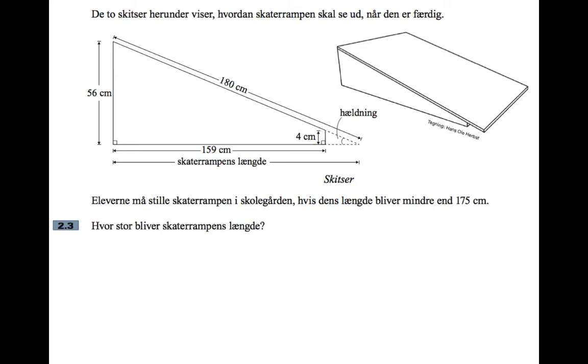The two sketches below show how the skater ramp should look when it's finished. The question is asking what will the skater ramp's length be, and that's on the diagram. So it's basically a missing side in a right-angled triangle. You've got 180 centimeters, you've got 56 centimeters, and you're missing the third side of that right-angled triangle. So this is a Pythagoras problem. It's nothing to do with angles, it's Pythagoras.